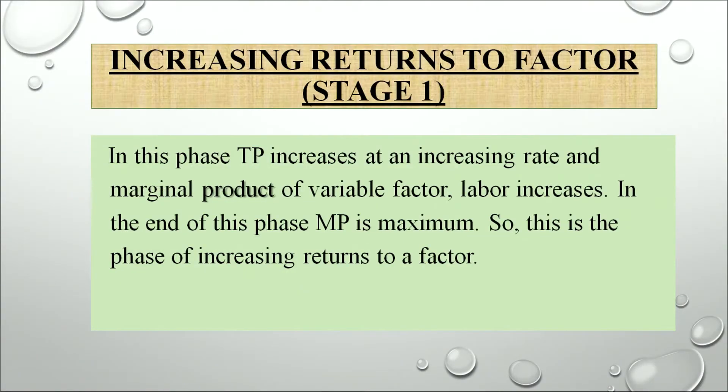Discussing these three stages in detail: the very first stage — in this phase, total product or TP increases at an increasing rate initially and the marginal product of the variable factor and labour increases. At the end of this phase, MP is at its maximum. So this is the phase of increasing returns to a factor, because in this stage both TP and AP are increasing.